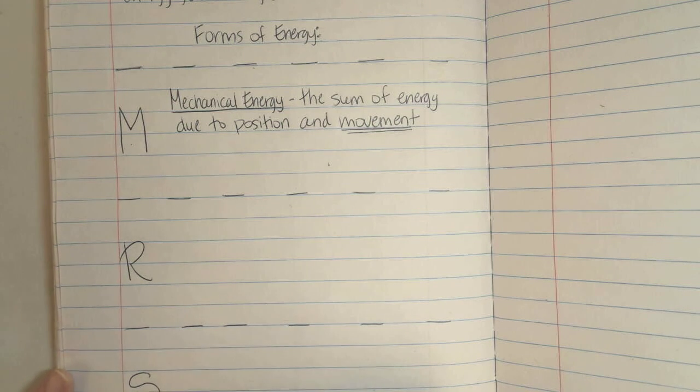Officially, the definition is the sum of energy due to position and movement. Movement is our key word here. If something is moving, it has mechanical energy. I'm going to use this space down here for some examples. Remember to not judge my artwork. There's a reason I teach science and not art. But of course, every picture will have a label.